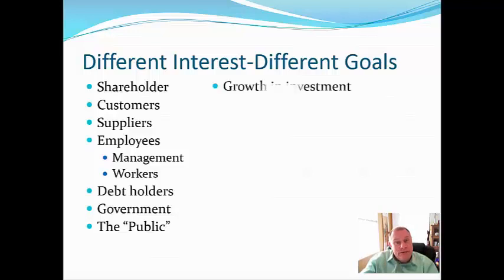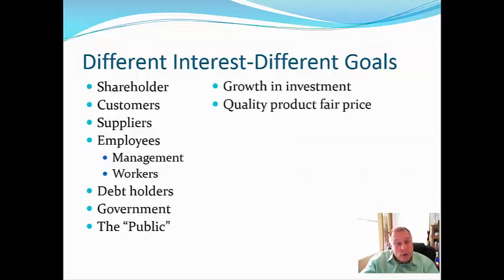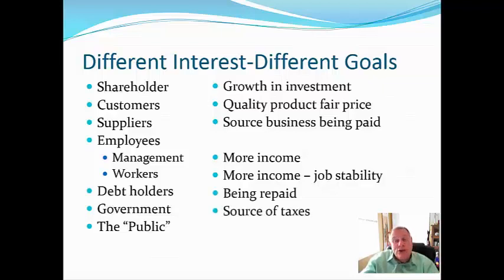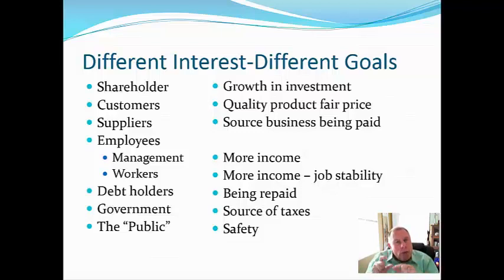A shareholder wants to see growth in investment. Customers want a quality product at a fair price. Suppliers want a reliable business that pays them. Workers want more income and job stability. Debt holders want to be repaid. The government sees the firm as a source of taxes. The public cares about safety. A firm could focus on one of these and not look at all of them — the question becomes how do you balance them.